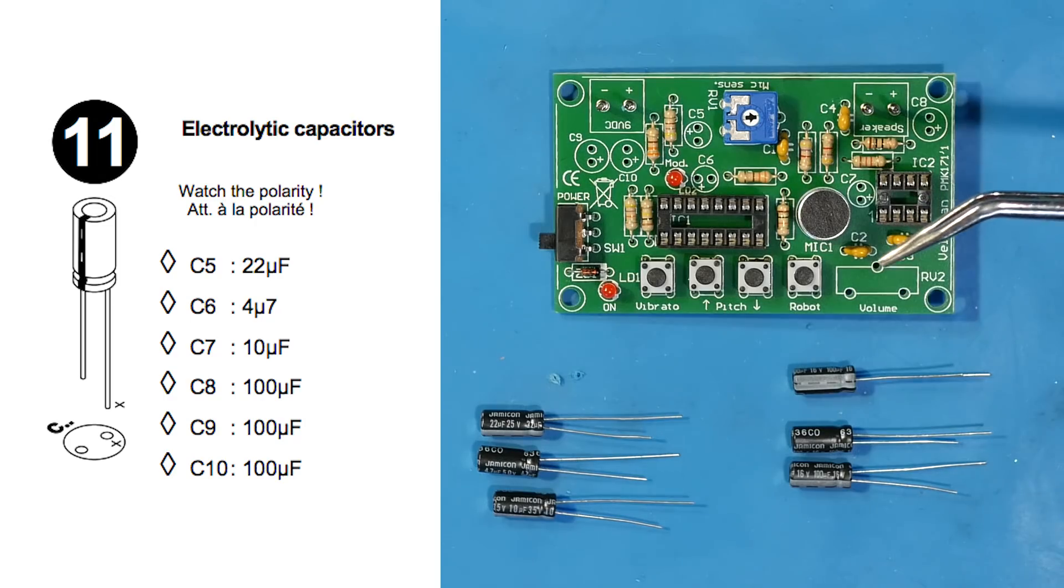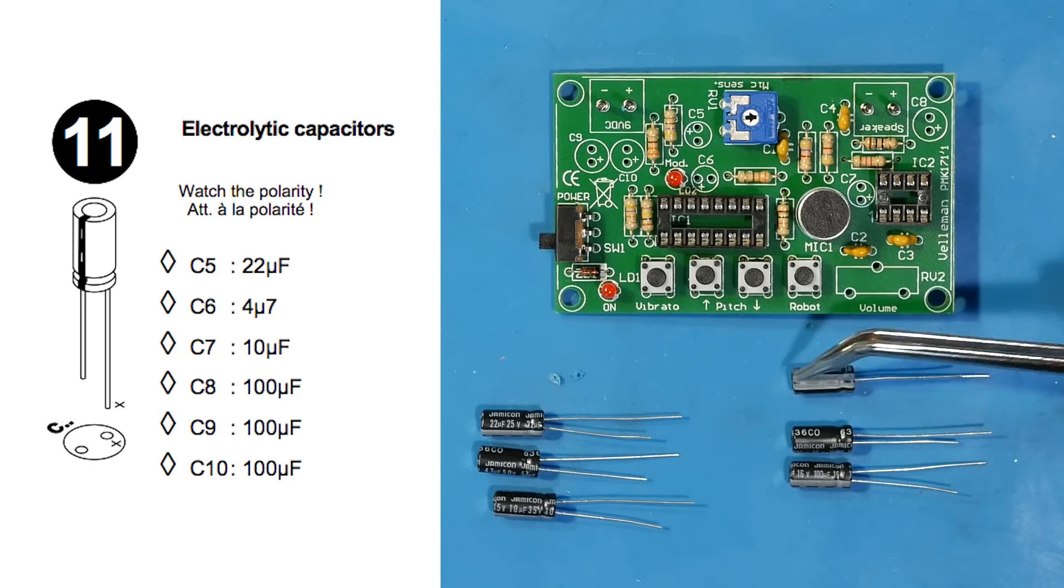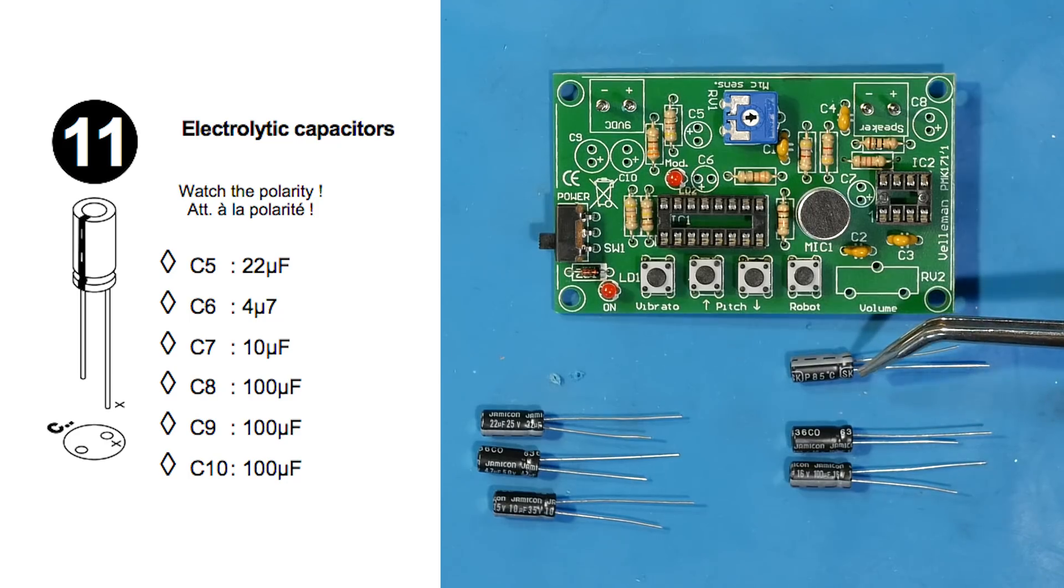We will be placing these in C5, 6, 7, 8, 9, and 10. Make sure that the longer lead goes in the hole next to the plus. You can also tell which side is the negative of the electrolytic capacitor by looking at the shorter lead or looking for the line on the side of the capacitor.